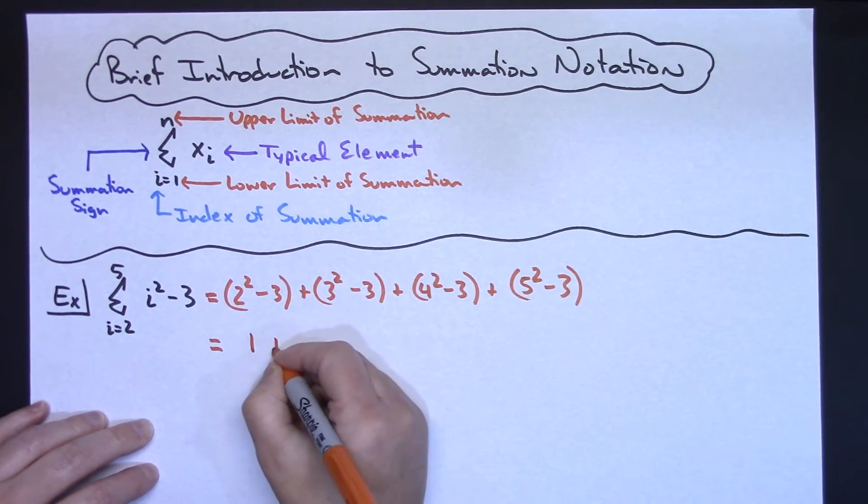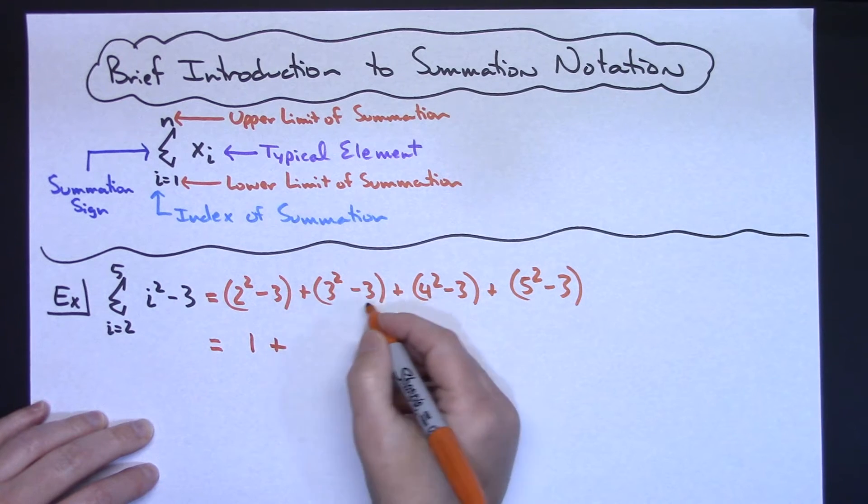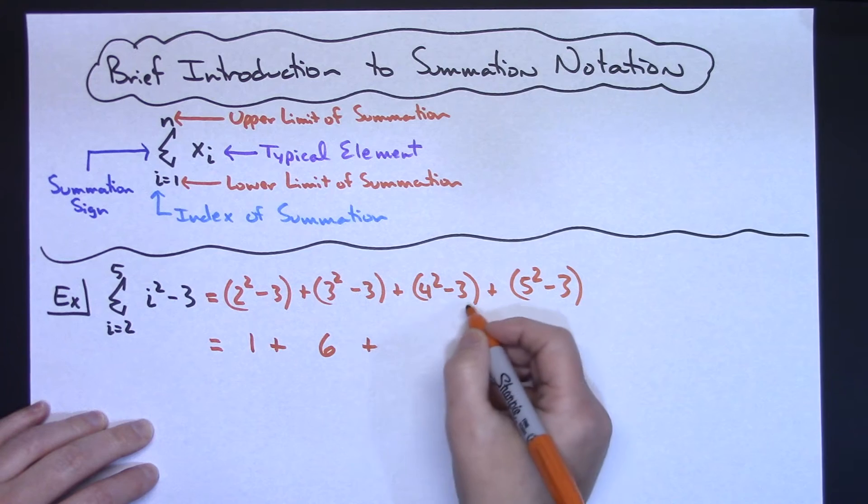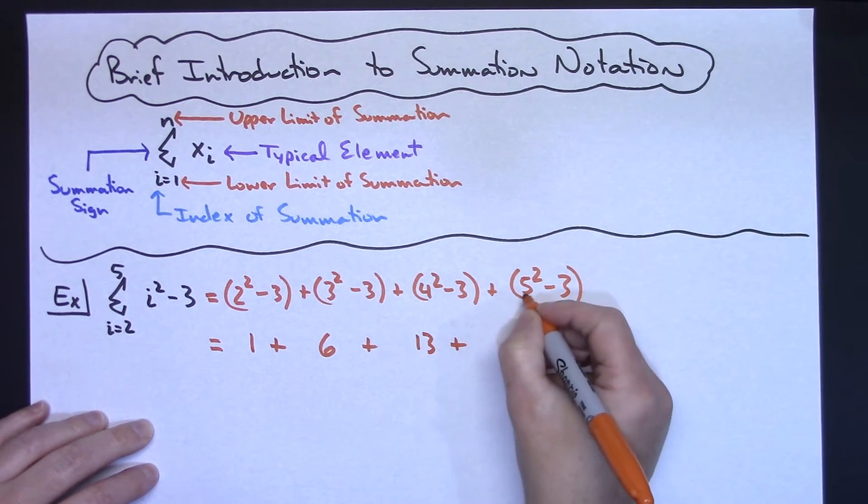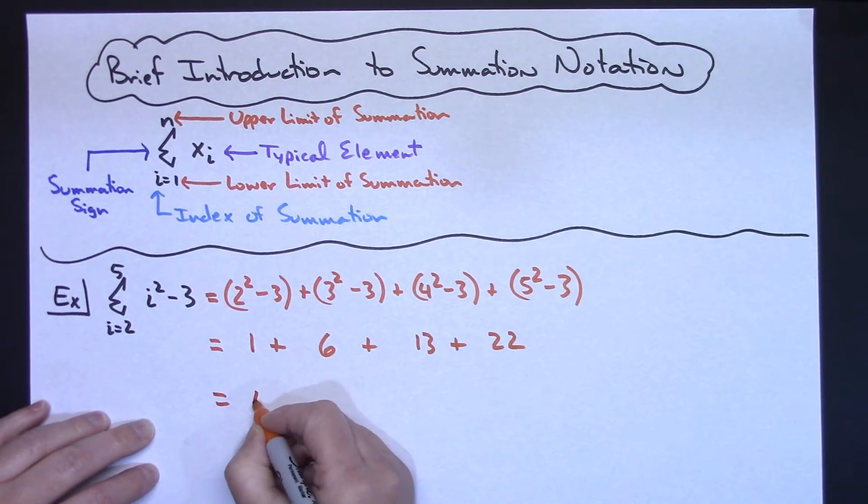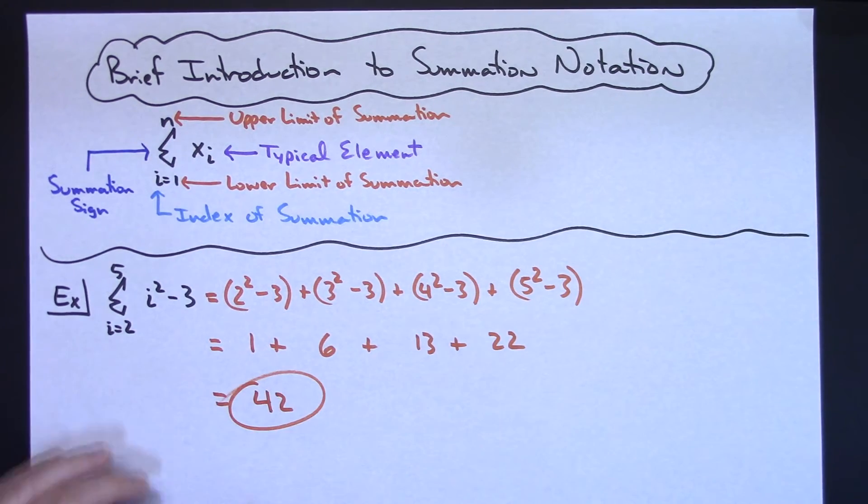So 4 minus 3 is going to give me a 1. 3 squared is 9 minus 3 is going to give me a 6. 4 squared is 16 minus 3 is going to give me a 13. 5 squared is 25 minus 3 is going to give me a 22. And when I sum all that up, then I'm going to get a 42.